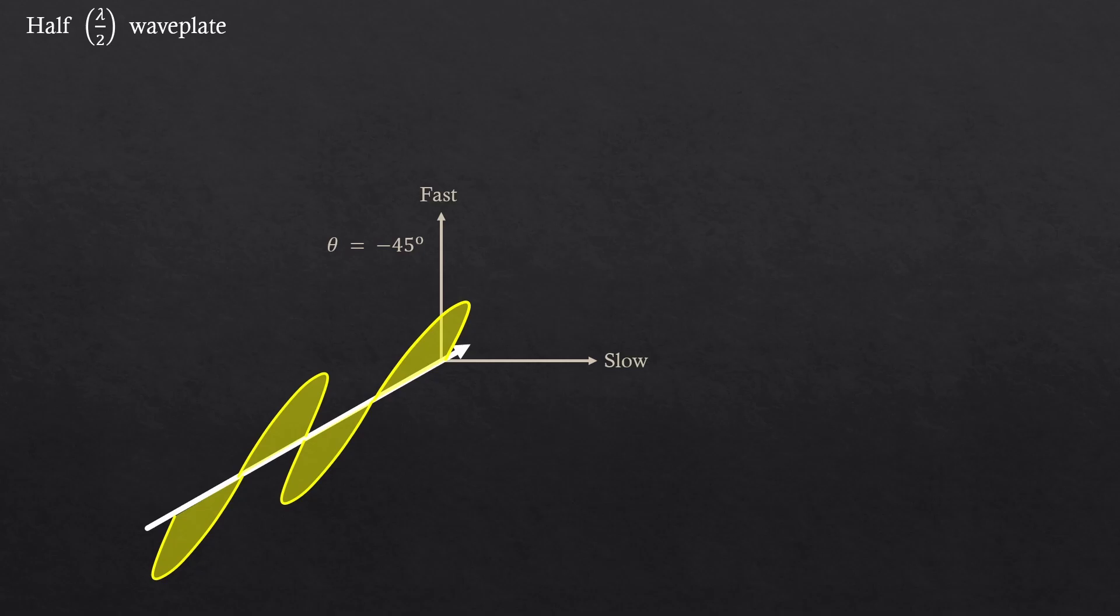Now, let's rotate our wave plate and our head more. So like negative 70 degrees, let's say. So again, we should decompose into fast and slow polarization components, right?